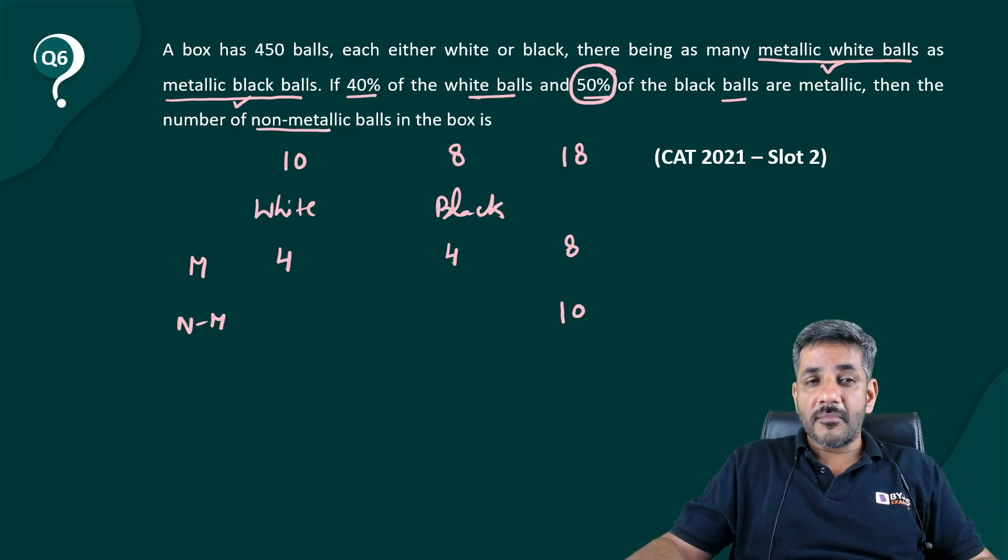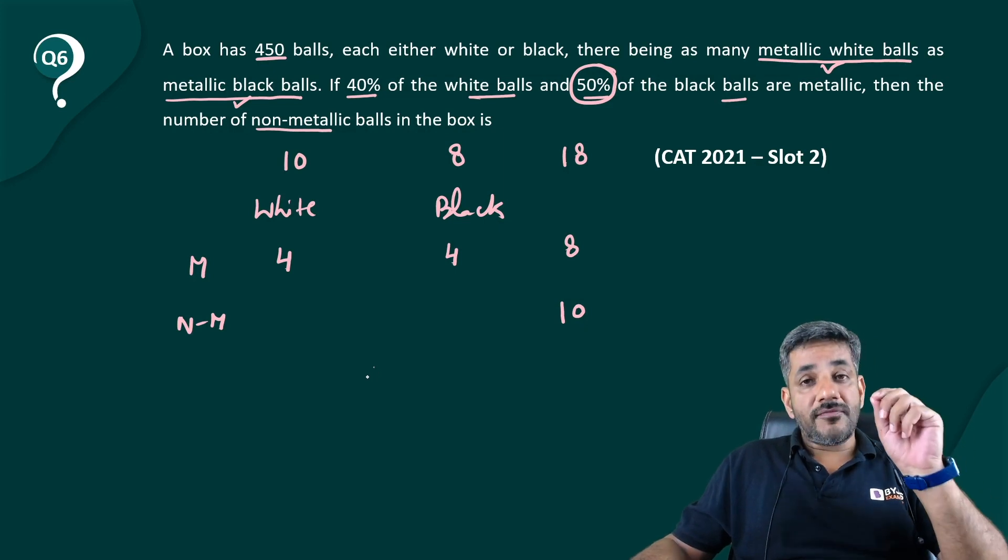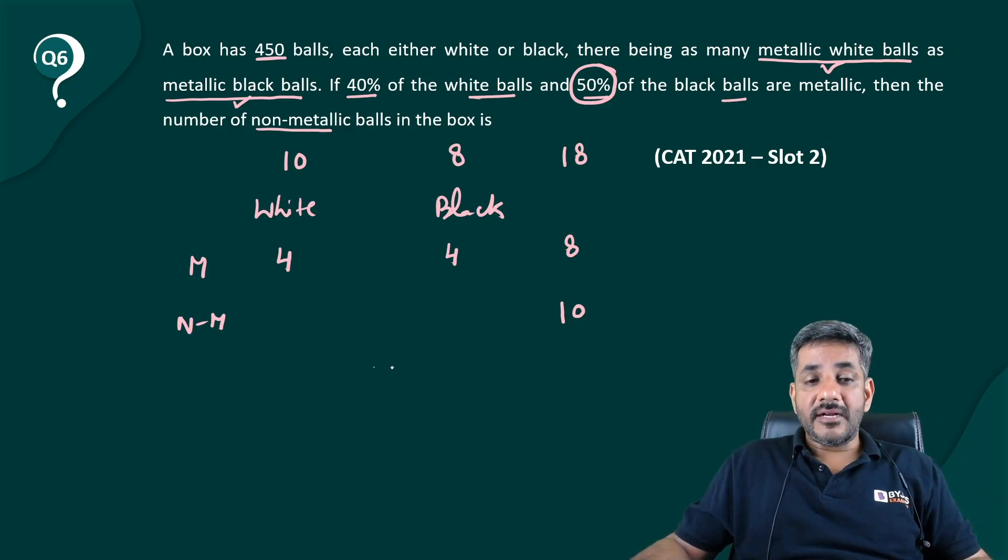asking you the number of non-metallic balls out of a total 450. So if out of every 18, 10 are non-metallic, then out of 450 how many of them are non-metallic? It is 450 into 10 divided by 18, and here I can cancel it out at 25, and this gives me the answer as 250.